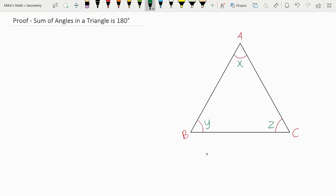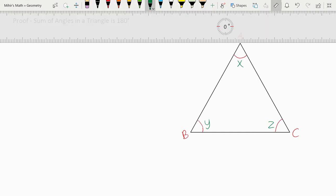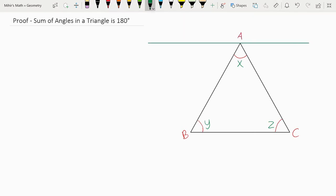The first thing I'm going to do is draw a line, and this line is parallel to the line BC. So it's parallel to this line that you could extend from BC.